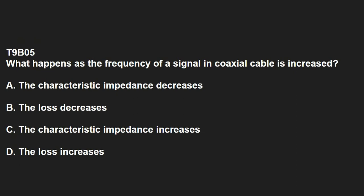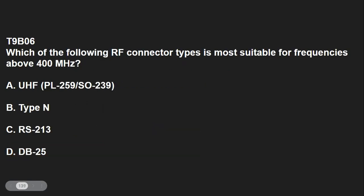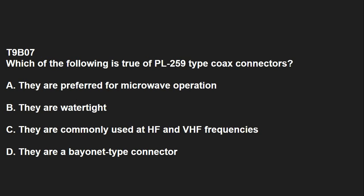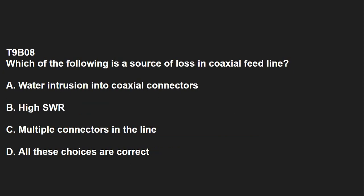T9B05: What happens as the frequency of a signal in coaxial cable is increased? That causes the loss to increase. T9B06: Which of the following RF connector types is most suitable for frequencies above 400 MHz? That's Type N. T9B07: Which of the following is true of PL-259 type coax connectors? They are commonly used at HF and VHF frequencies. T9B08: Which of the following is a source of loss in coaxial feed line? All of these choices are correct — water intrusion into coaxial connectors, high SWR, and multiple connectors in the line.